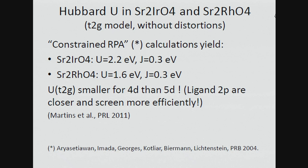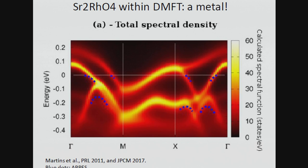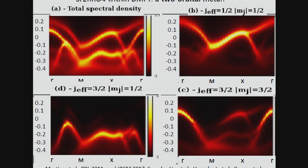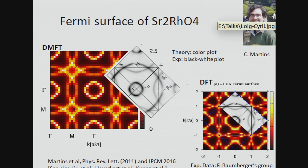We assessed the Coulomb interactions and, surprisingly at first sight but quite logically at second sight, they are slightly smaller. If we do the calculation, we end up with a nice metallic state — bands cutting the Fermi level. The blue dots are extracted from experiments from Felix Baumberger's group. In the orbital-resolved picture, one of the 3/2 states sank below the Fermi level, as has been noted by other authors before. In the two remaining orbitals, you keep charge — so the effective degeneracy is reduced from three T₂g states to two T₂g states, with one eliminated in the process.